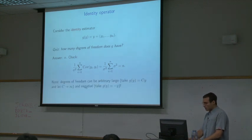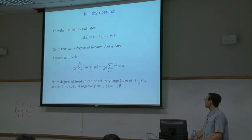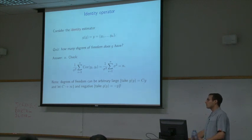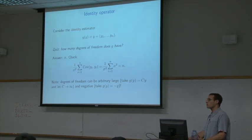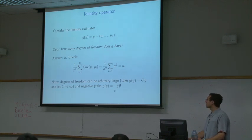It's helpful to note that degrees of freedom can be arbitrarily large — taking c times y and letting c go to infinity gives arbitrarily complex procedures. It can also be negative, which is strange. Taking minus y gives degrees of freedom of minus n, for example.